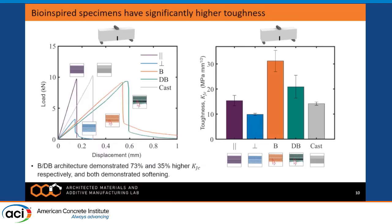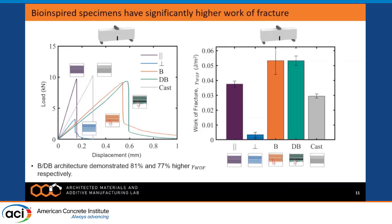Moving to the fracture tests on notched bend specimens, we can immediately observe a tapering softening effect for both bio-inspired architectures. This leads to a 73% increase in fracture toughness for the Bouligand samples and 35% for the double Bouligand samples, compared to brittle failure in the parallel lamellar and cast reference cases. For work of fracture — the area under the curve divided by the nominal fracture area — we see about an 80% increase.